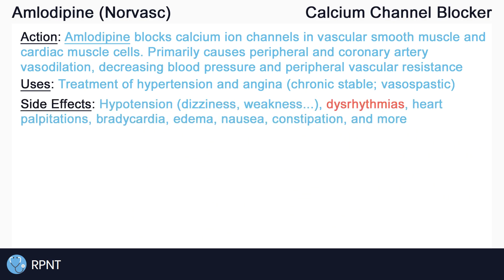Amlodipine has many side effects which stem from vasodilation. Vasodilation can cause hypotension or abnormally low blood pressure. Hypotension may manifest as dizziness, weakness, headaches, flushing, syncope — which is a loss of consciousness due to low blood pressure — orthostatic hypotension, and more. Amlodipine may also cause dysrhythmias, heart palpitations, and bradycardia due to its effect on cardiac muscle cells.